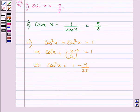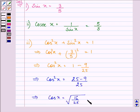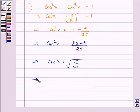So after simplification we have the value of cos square x as plus minus 4 by 5.